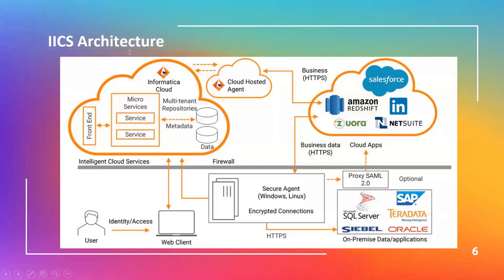The source is where data is read from, and the target is where the data is written to. The IACS repository source and target metadata includes field names, data type, precision, and other information about the source and target objects. The IACS repository also stores mappings — when you create a data integration task, the repository stores these mappings and the transformation rules.